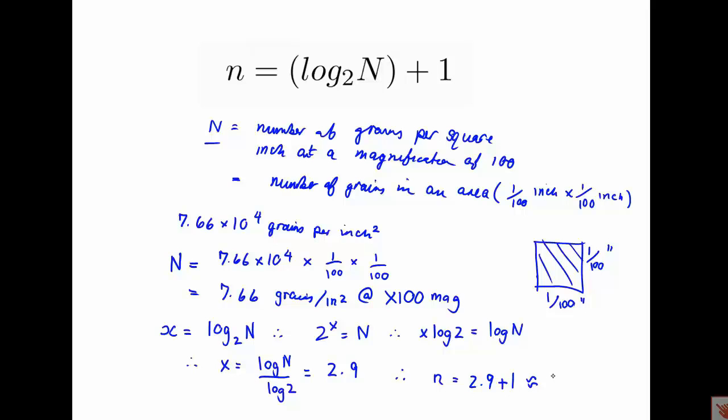So that's the ASTM grain size number for that material. If you go online, you can look up grain size numbers and see what that means in terms of the number of grains per millimeter squared. You will see that the number of grains observed in that image per millimeter squared is consistent with an ASTM grain size number of 4.